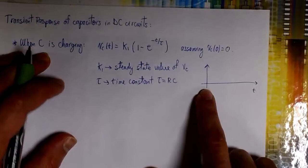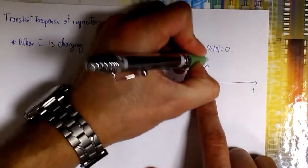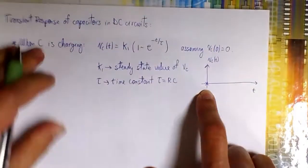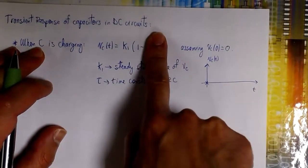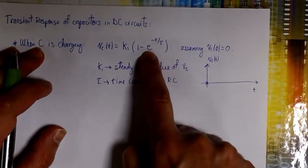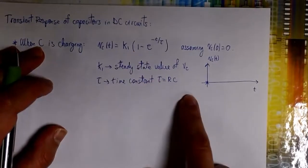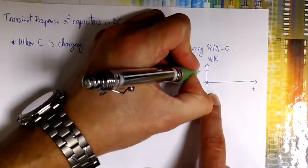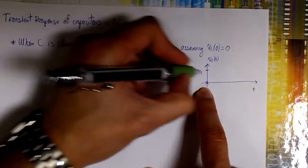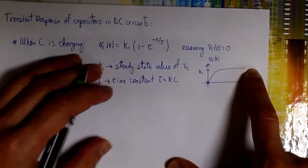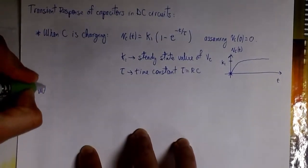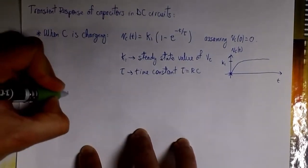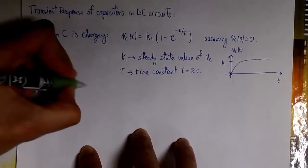Now when t is equal to zero, the whole thing is equal to zero. If you want to plot this equation: at t equals zero, the exponential is one, and one minus one is zero — so we get zero. When t goes to infinity, the exponential is zero, so the final value is k1. So the voltage between the terminals of C starts at zero, it is charging, and it is going to reach a final value of k1 when it is in steady-state.